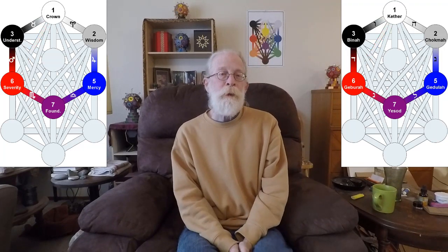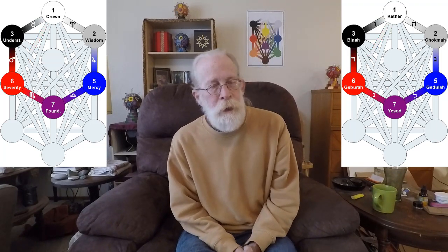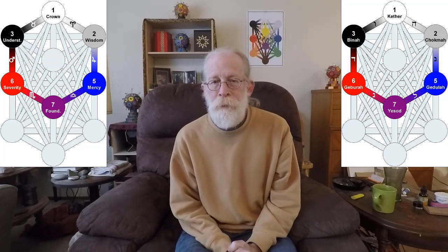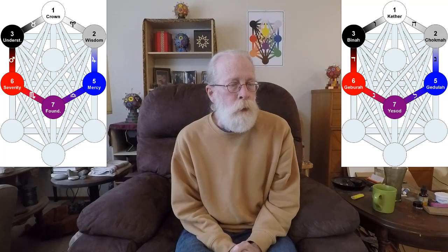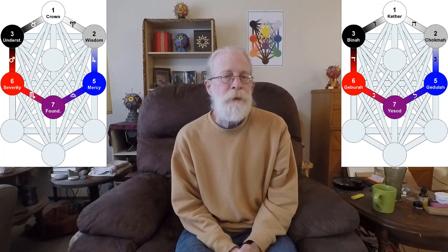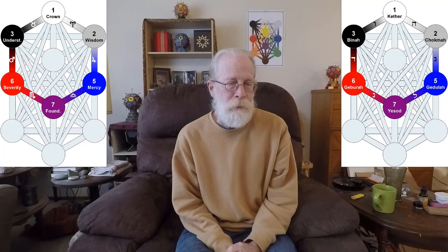Now, gate number 52. This is a very special gate. This is our first hexangle, and it's the first of two perfect hexangles in the tree of life.